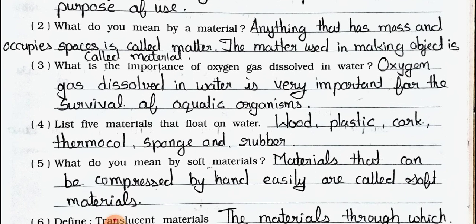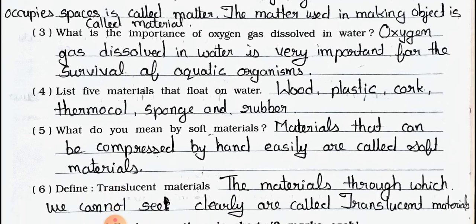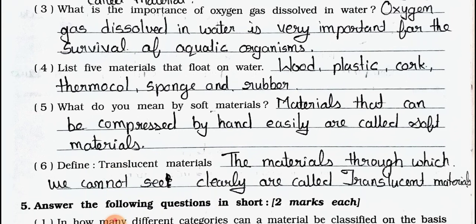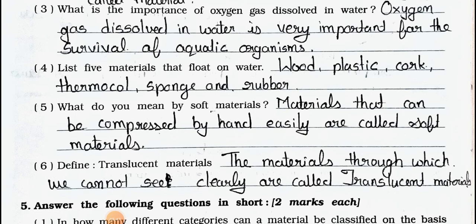Question Number 3: What is the importance of oxygen gas dissolved in water? Answer: Oxygen gas dissolved in water is very important for the survival of aquatic organisms. Question Number 4: List 5 materials that float on water. Answer: wood, plastic, cork, thermocol, sponge, and rubber.